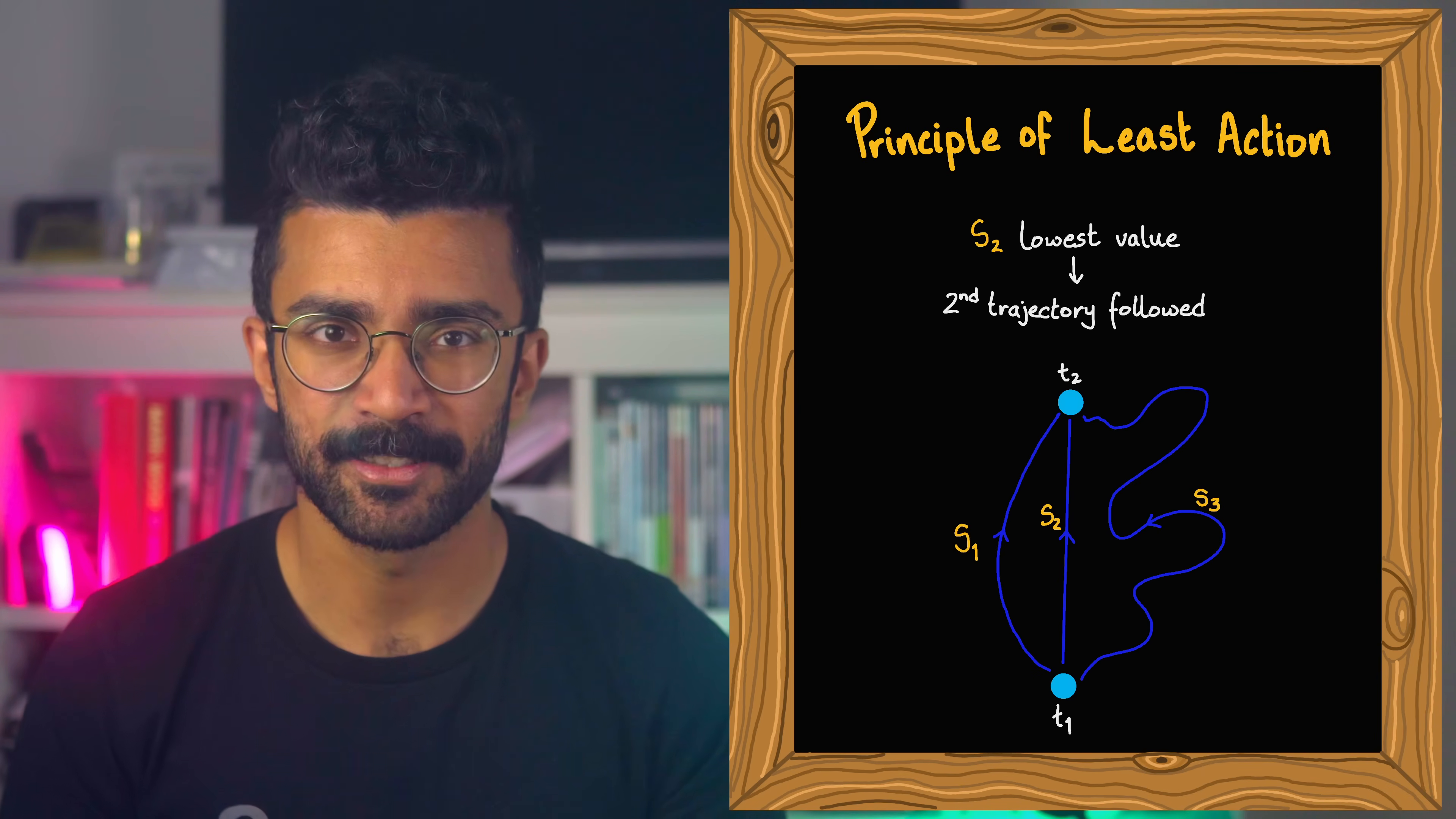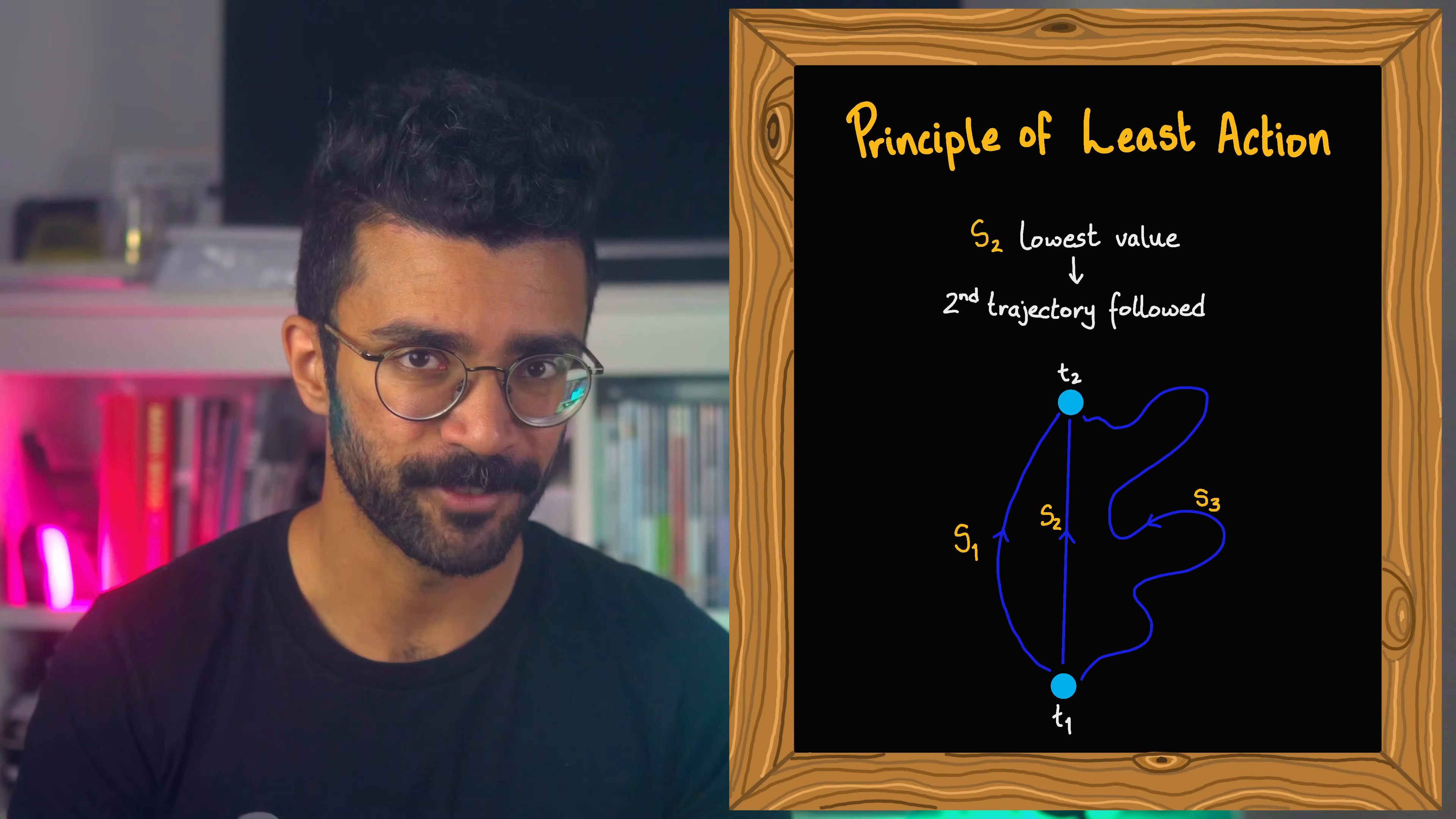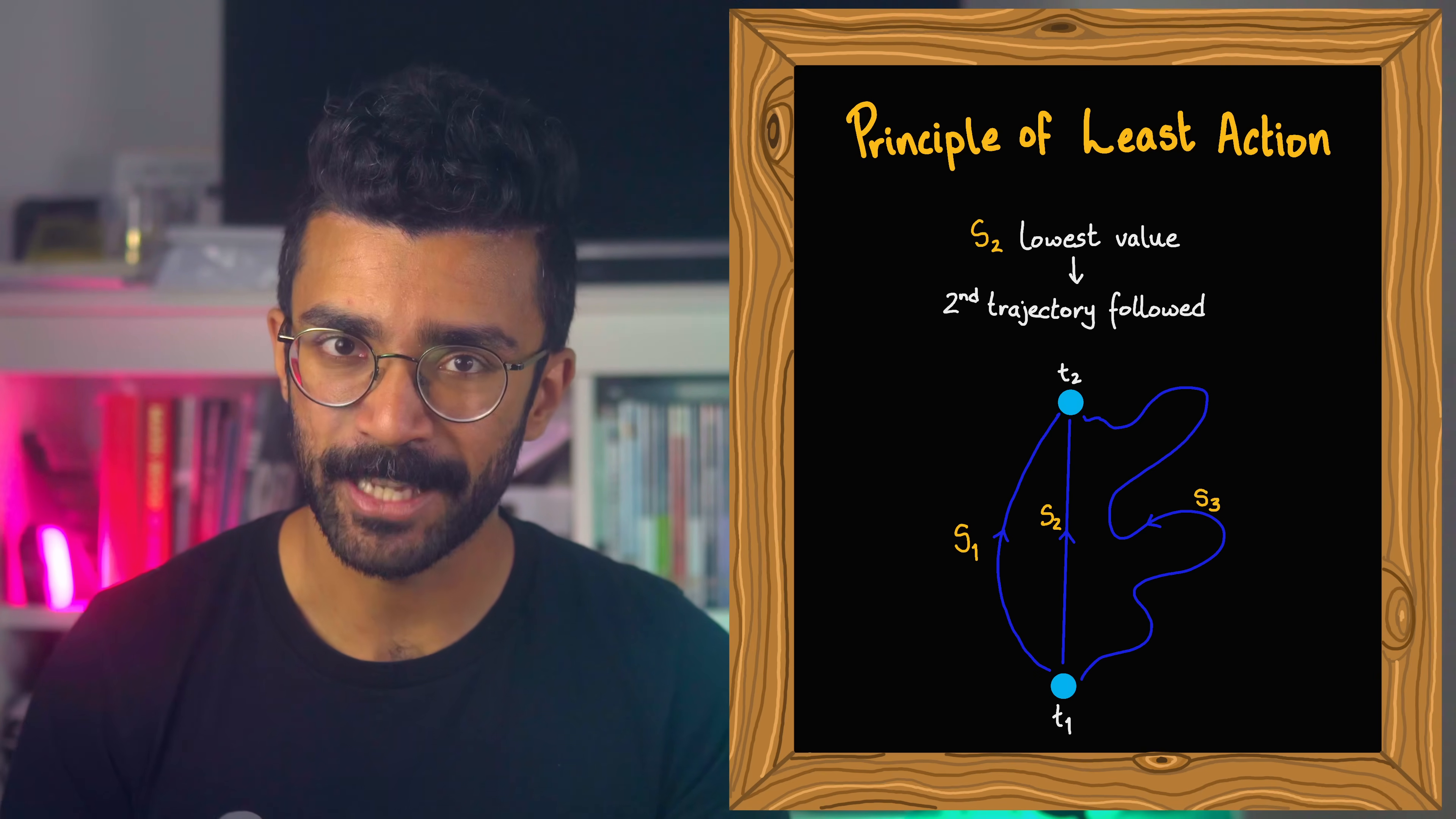Now technically, in some cases, it's not the least action that gives the right trajectory, but it's when s is stationary. But for our purposes, let's just say we're going with the principle of least action, or the value of s is as small as it possibly can be. So that is how we can find the trajectory of our particle from its energy, rather than by considering forces like we did with Newtonian mechanics.